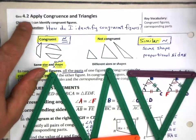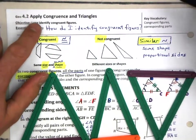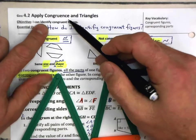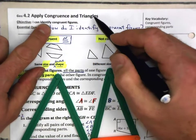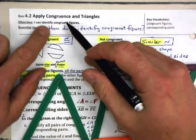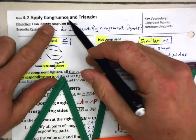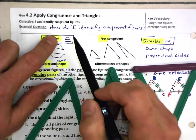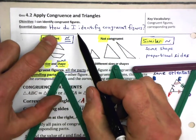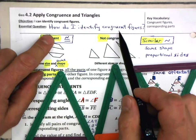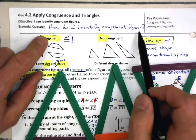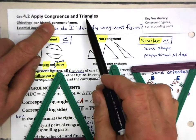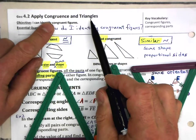Welcome to 4.2, where we are going to apply congruence and triangles. Our essential question is: how do I identify congruent figures? We've been talking about congruence for a while, and now we're going to apply it to triangles.